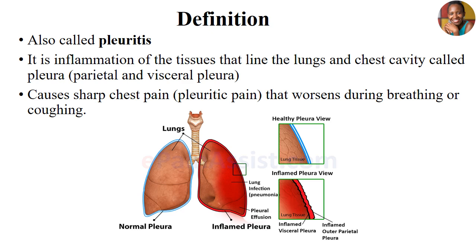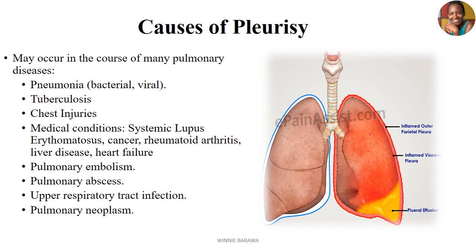In the case of pleuritis, the disease inflames these two coverings, causing extreme sharp pain called pleuritic chest pain, which worsens when the person is breathing. Pleuritis is normally explained to occur mainly in the presence of other pulmonary diseases, where it manifests as a secondary condition.